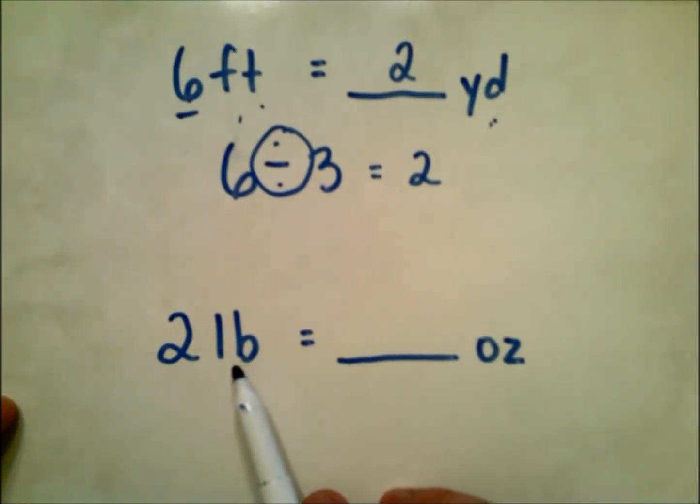But what if we're doing the opposite? We're going from pounds to ounces in this example. We know that ounces are much smaller than pounds, so we are going from a larger unit to a smaller unit. To go from a larger unit to a smaller unit, we're going to multiply.